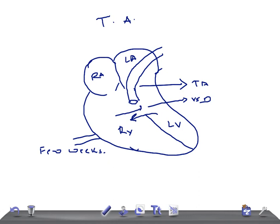So if there is a shunt from left to right, the patient will have dyspnea, frequent respiratory tract infection, and failure to thrive.